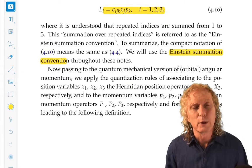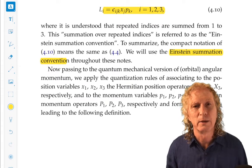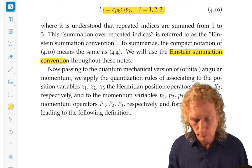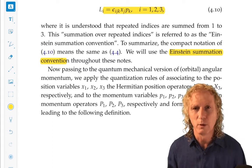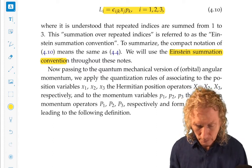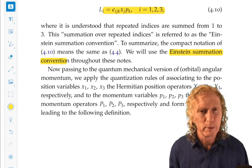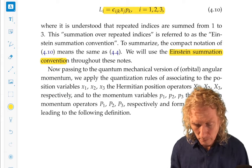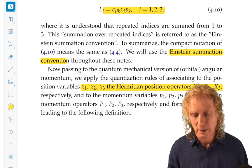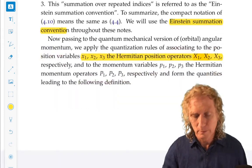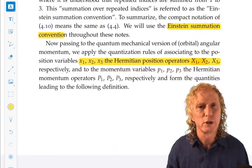So, how are we going to get the quantum mechanical version of orbital angular momentum? Hopefully, you can guess by now what we're doing in this course. Okay. For the position variables, we're going to replace them by the Hermitian or self-adjoint position operators.